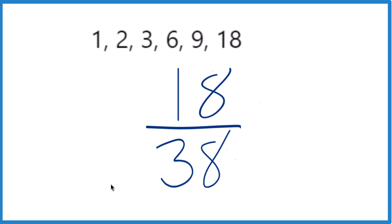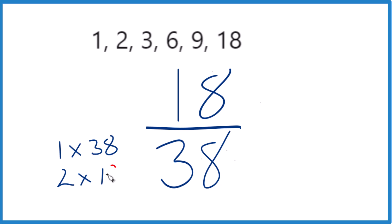Then for 38, we end up with 1 times 38 and 2 times 19, that's 38. These are our factors. We're looking for the greatest common factor between 18 and 38. That is 2.